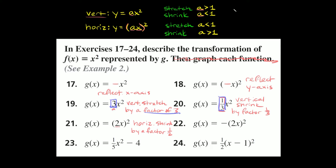Even the factor numbers are different. For vertical, the a number is just the factor as-is — completely normal. For horizontal, it's the opposite: you have to take the reciprocal of your a number to find the factor.